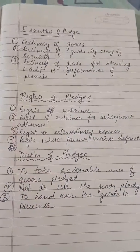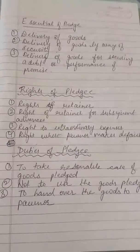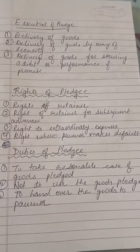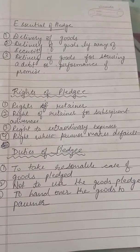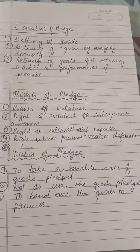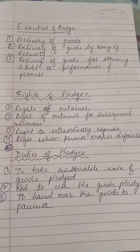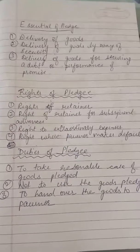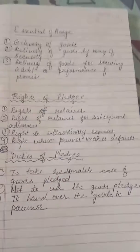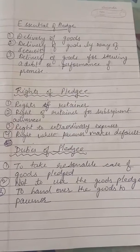Next is the right to extraordinary expenses. अगर कोई extraordinary expense होता है - जैसे Mr. A अपना horse गिरवी रखके जाते हैं Mr. B के पास, तो Mr. B को horse की medical expenses या feeding expenses bear करने पड़ते हैं - उसको extraordinary expenses कहते हैं. उन extraordinary expenses को recover करने का right pledgee के पास है. वो right to lien तो enforce नहीं कर सकता, but एक separate case file कर सकता है pawnor के against.